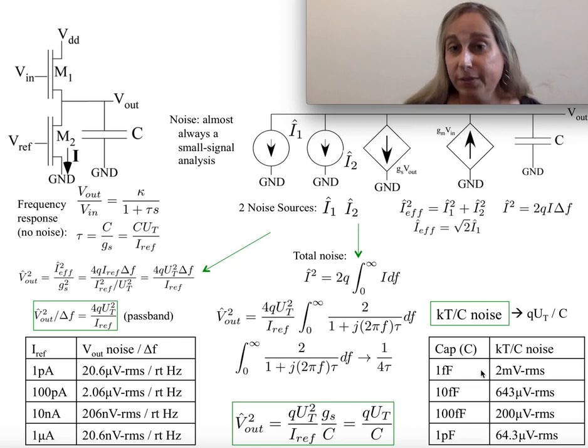The classical way to derive kT over C noise is with a resistor and a capacitor, and you get the exact same behavior. Because with a resistor, you can do it at zero bias - it means you've got two currents actually subtracting each other, which means you actually have two noise sources that have to add.